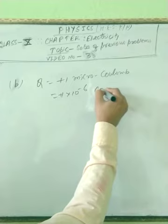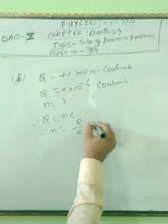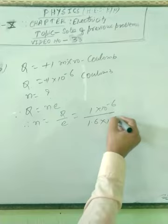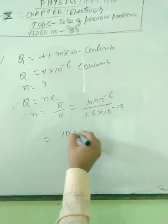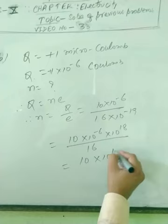Again you have to find N. Write Q equals NE, therefore N equals Q by E, that is 1 into 10 to the power minus 6 by 1.6 into 10 to the power minus 19. Remove this decimal, put here 10, then 10 into 10 to the power minus 6 into 10 to the power 19 by 16. Now 10 into 10 to the power 12 by 16.